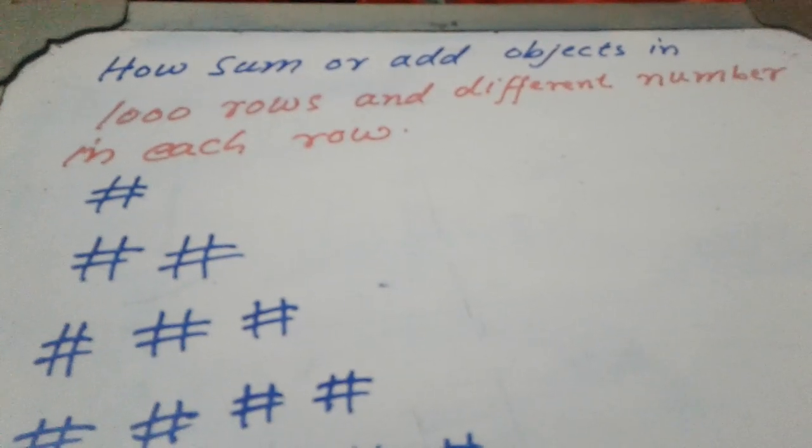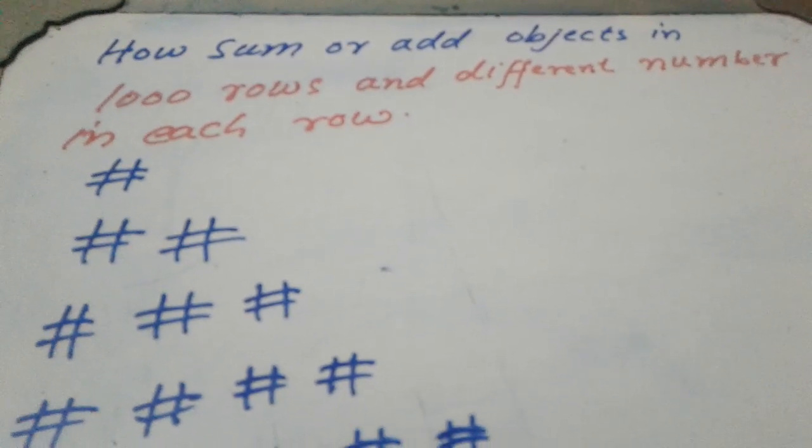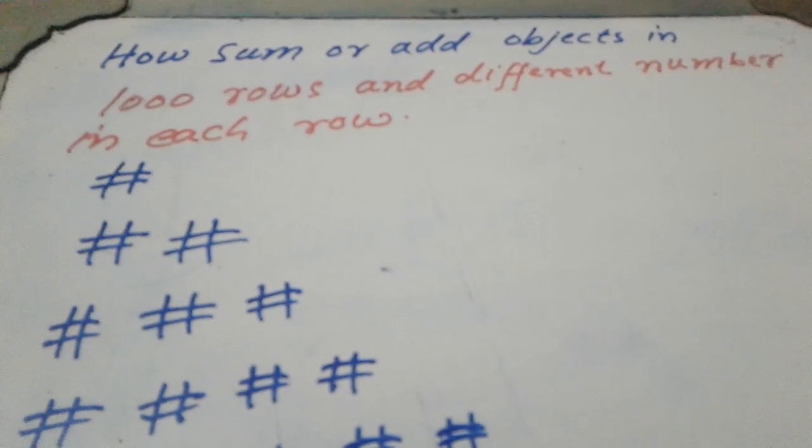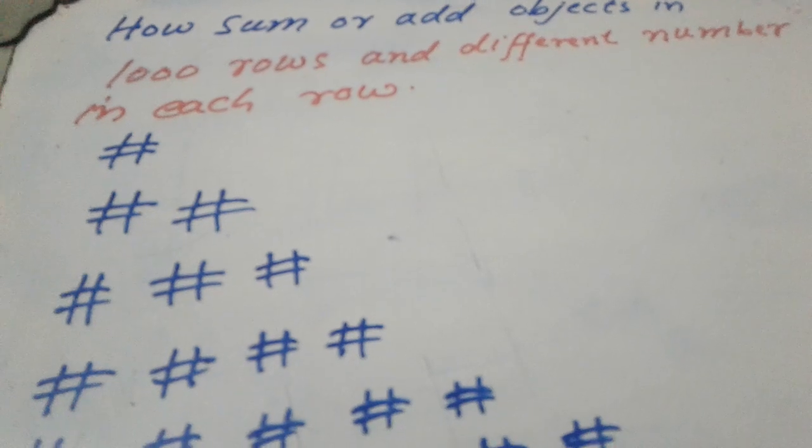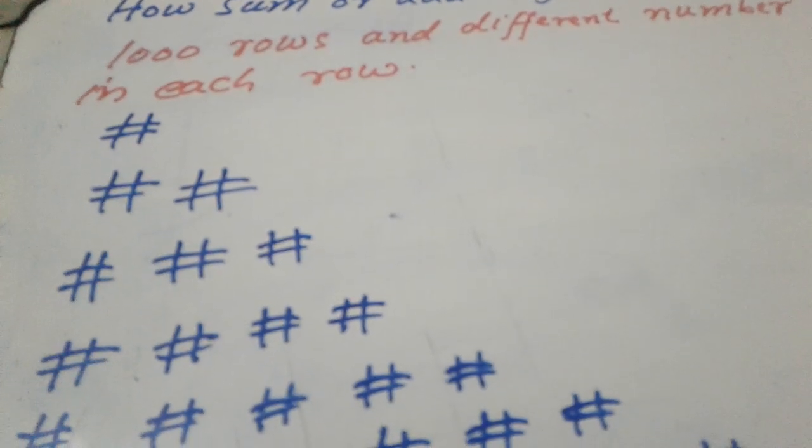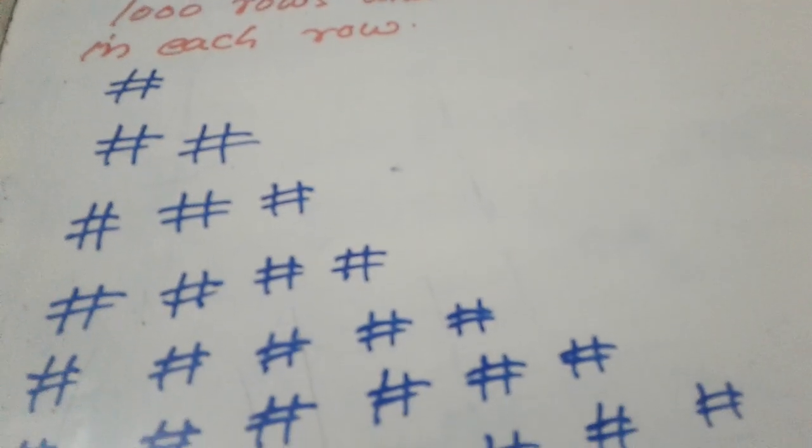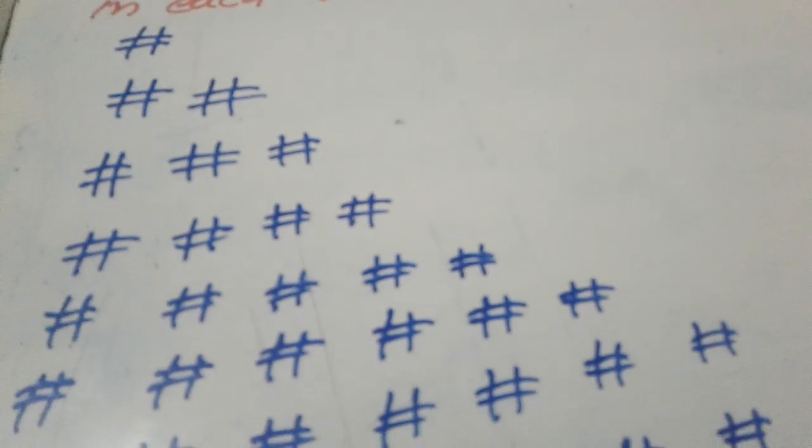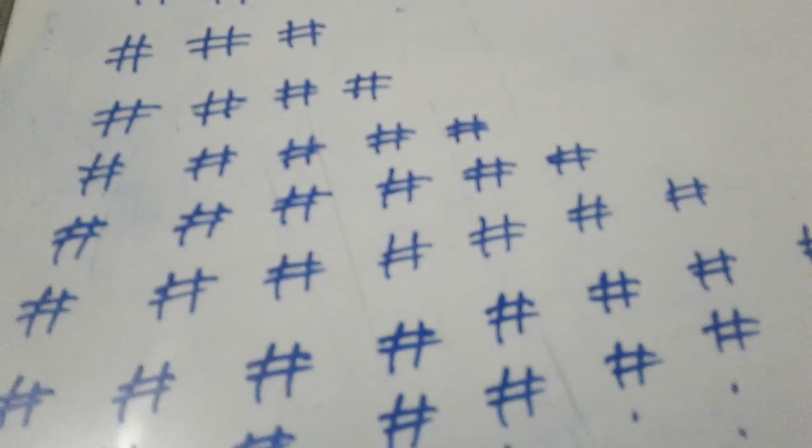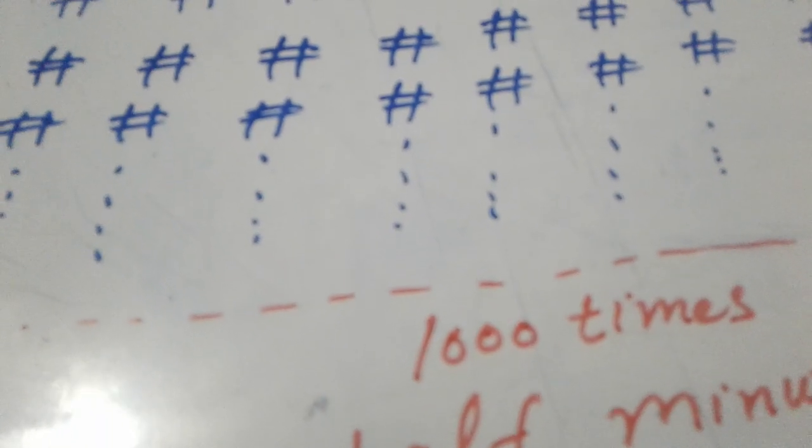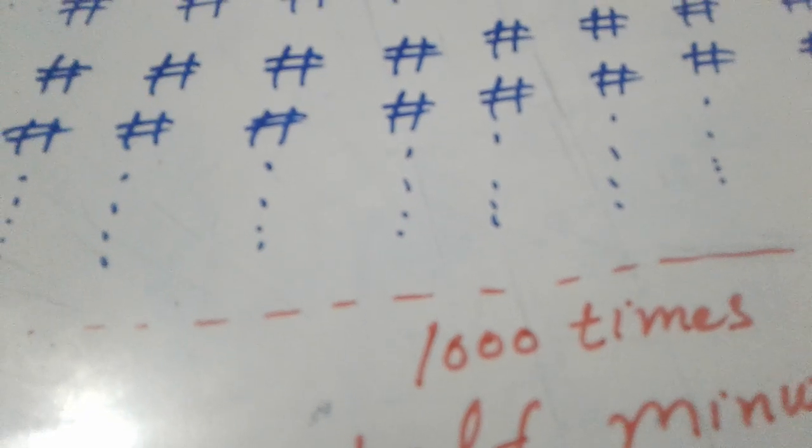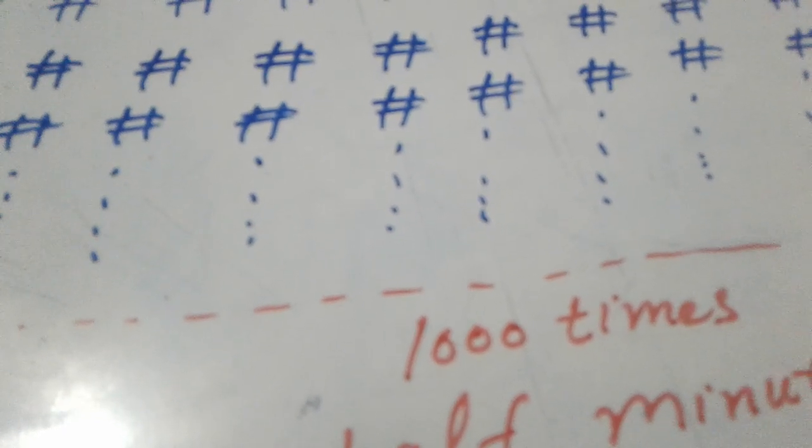How to sum or add objects in 1000 rows with different number in each row? One in first row, second row two objects, third row three objects, fourth row four objects, fifth row five objects, sixth row six objects, up to one thousand rows. The last row, row one thousand, will have one thousand objects. How is the sum?